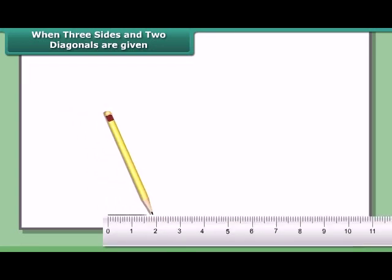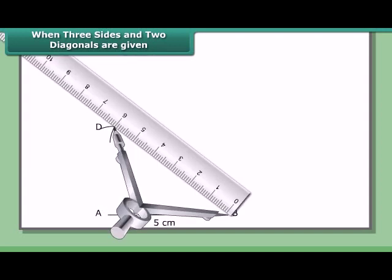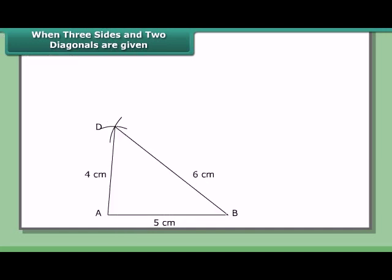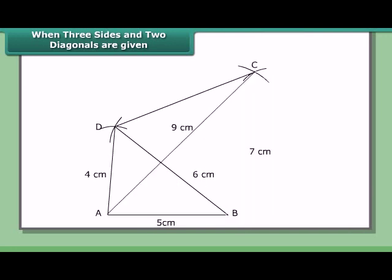Steps: Draw AB = 5 cm. With A and B as centers and 4 cm and 6 cm as radii respectively, draw arcs to cut each other at point D. Join AD and BD. With A and B as centers and 9 cm and 7 cm as radii respectively, draw arcs to cut each other at C. Join AC, BC, and also DC.